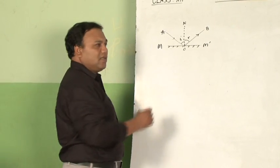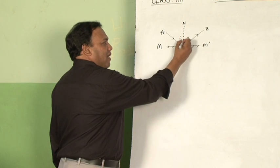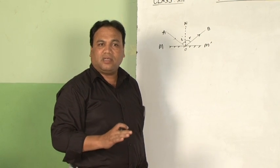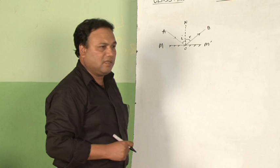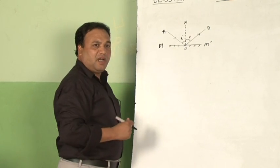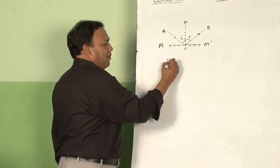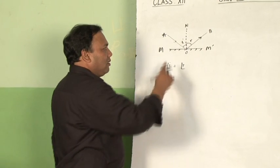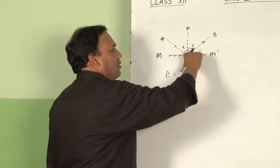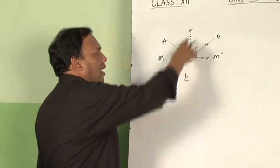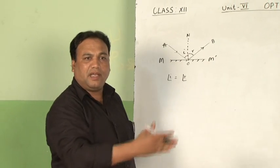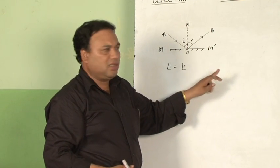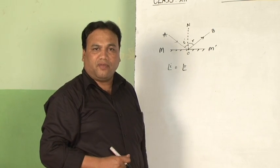This phenomenon in which light is sent back from a surface into the same medium is called reflection. Reflection takes place when light falls on a highly polished surface, whether plane or curved. The laws of reflection are: first, the angle of incidence equals the angle of reflection; second, the incident ray, the reflected ray, and the normal all lie in the same plane.